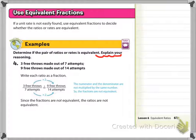Determine if the free throw ratios are equal or not and explain your reasoning. So 3 free throws made out of 7 attempts and 9 free throws made out of 14 attempts.